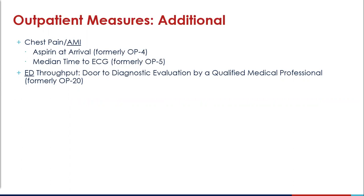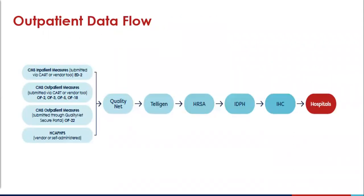Here is a list of additional outpatient measures that are available to report. If anyone is looking for more specific information on what these measures are, please reach out and we are happy to help. Here is a visual of the data flow process for outpatient measures. You will see that the information is submitted through CART or a third-party vendor, and goes through QualityNet, Telogen, HRSA, IDPH, and then to IHC for dissemination of your quarterly reports.